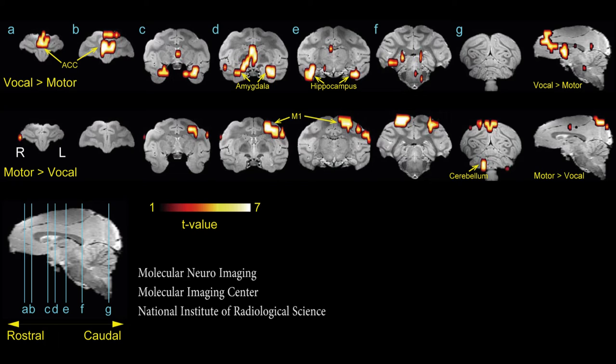During the expression of vocal tics, a rather different pattern emerged. Injections delivered to one hemisphere caused bilateral activation in the deep nuclei of the brain, including the hippocampus and amygdala, while increased activity in the cortex was focused on the anterior cingulate region.